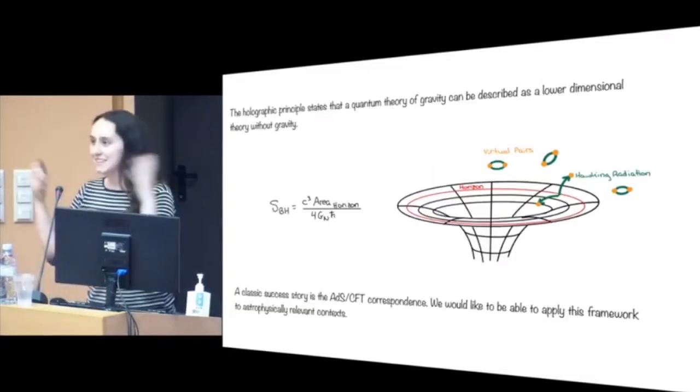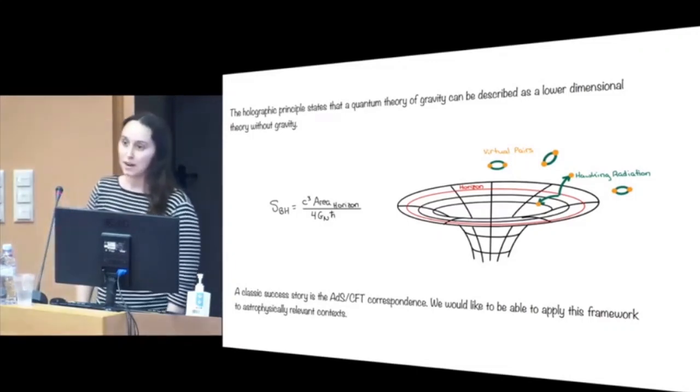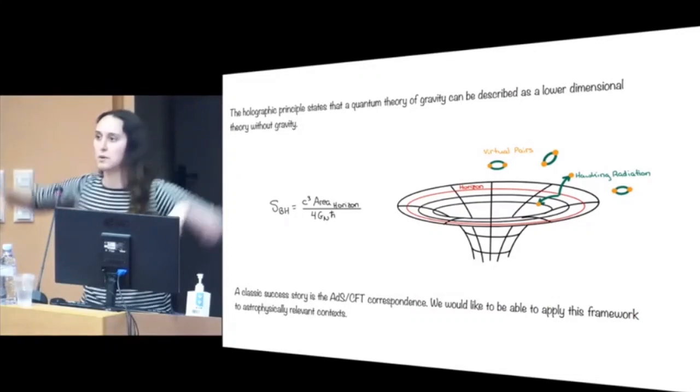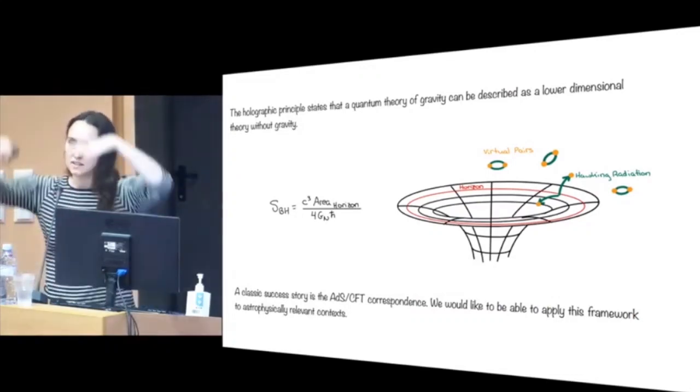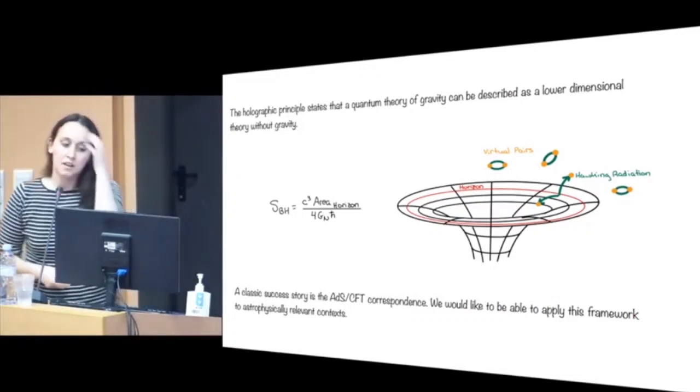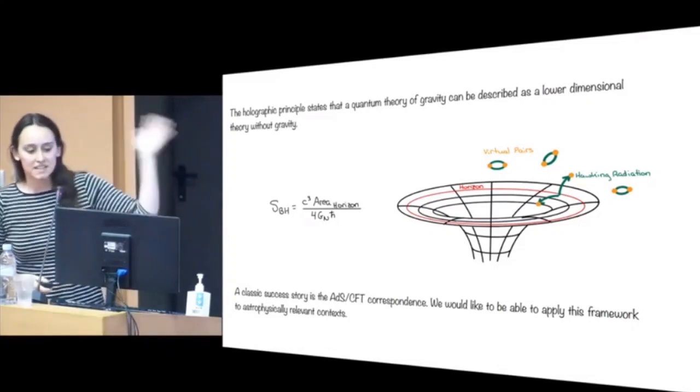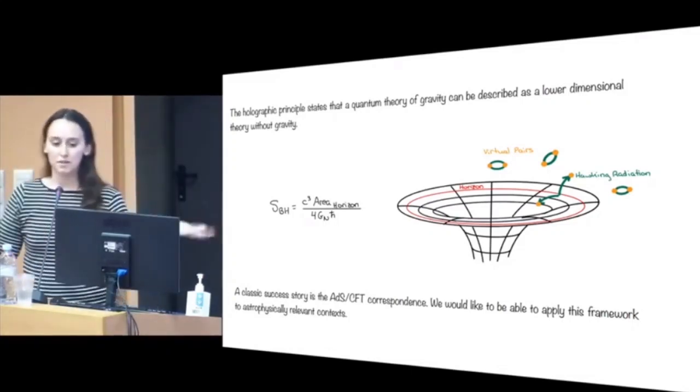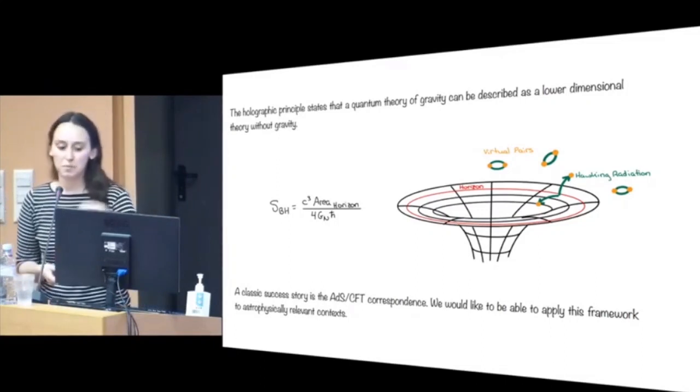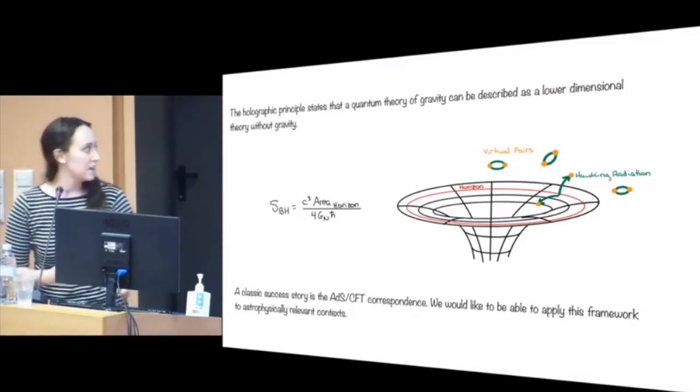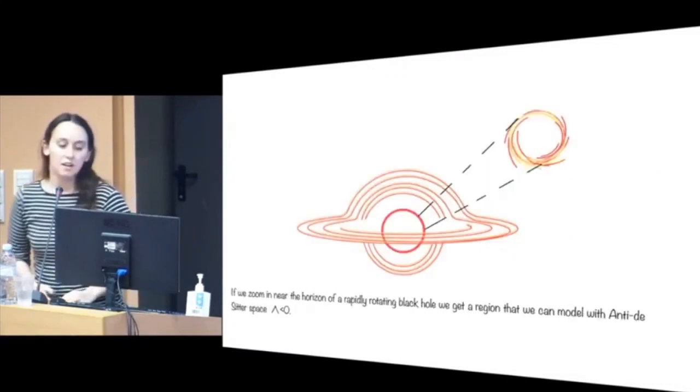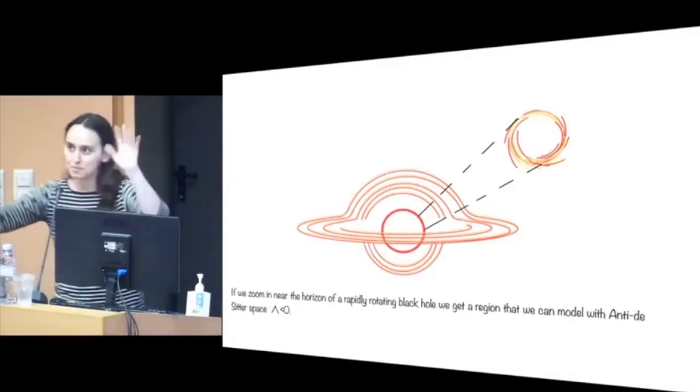We basically expect quantum gravity to be holographic. So for whatever bulk spacetime we have, we want to look at how to encode that in this non-gravitational theory on the boundary. The classic success story is ADS-CFT, but that has the wrong sign cosmological constant. So let's play a little game of Goldilocks here.